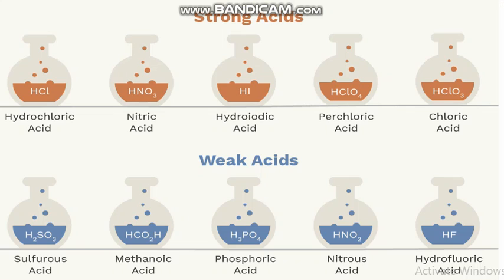Here are some strong acids and weak acids used in the laboratory. Some strong acids are hydrochloric acid, nitric acid, hydroiodic acid, perchloric acid, and chloric acid. Some weak acids are sulfuric acid, methanoic acid, phosphoric acid, nitrous acid, and hydrofluoric acid.